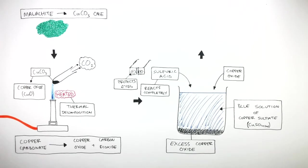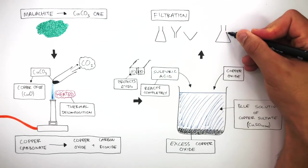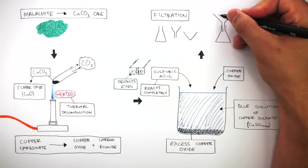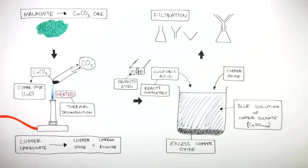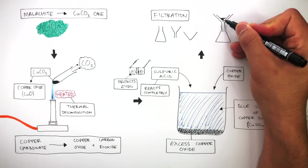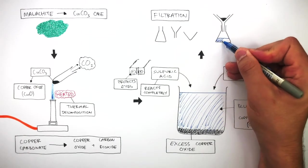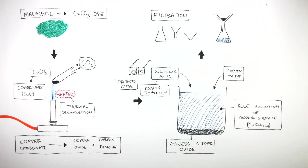To separate the excess copper oxide from the copper sulfate solution, we use filtration. Filtration needs a conical flask, a filter funnel, and filter paper. The filter funnel is placed inside the conical flask, and the filter paper is placed inside the filter funnel. The excess copper oxide is trapped in the filter paper — this is the residue. The copper sulfate solution flows into the conical flask — this is the filtrate. We now have pure copper sulfate solution.